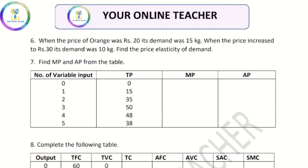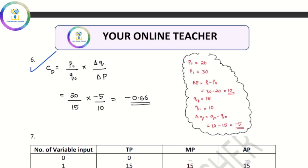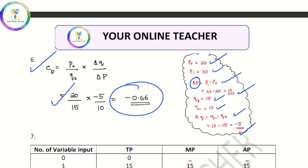When the price of orange was rupees 20, its demand was 15. When price increased to 30, demand was 10 kg. Price elasticity of demand equals P0 by Q0 into delta Q by delta P. P0 is the initial price, Q0 is the initial quantity. Delta P is P1 minus P0, delta Q is Q1 minus Q0. So delta Q is 10 minus 15 equals minus 5.